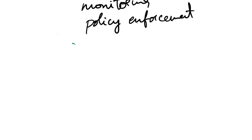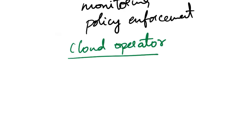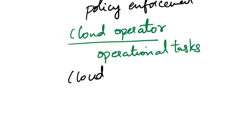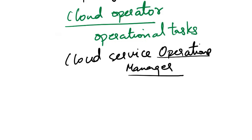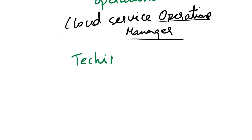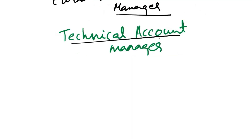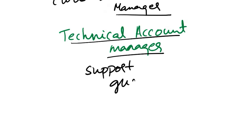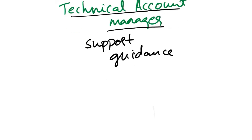Next role is cloud operator. The operator is responsible for daily operational tasks. Next role is cloud service operations manager. The operations manager oversees and manages the operations and performance of cloud services provided to customers. Next role is technical account manager. The technical account manager provides account support and high-level technical guidance to cloud customers.